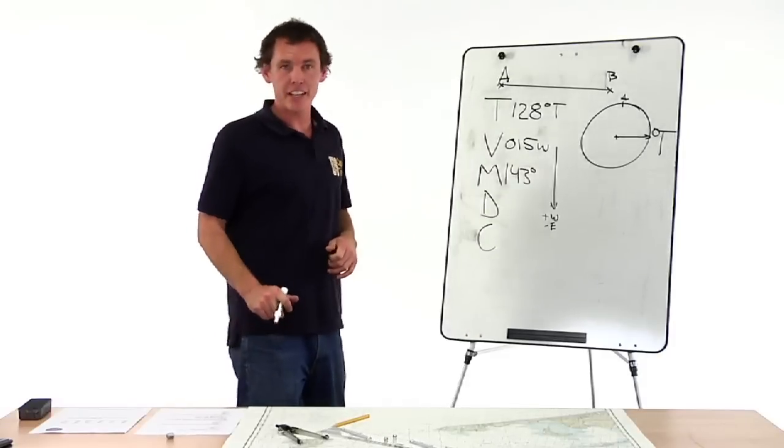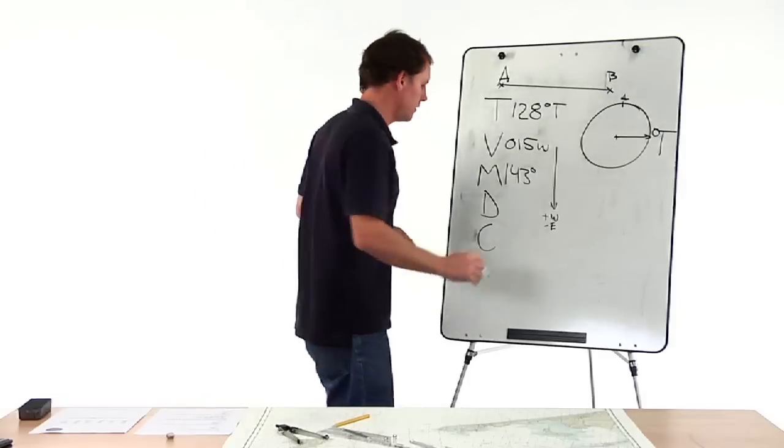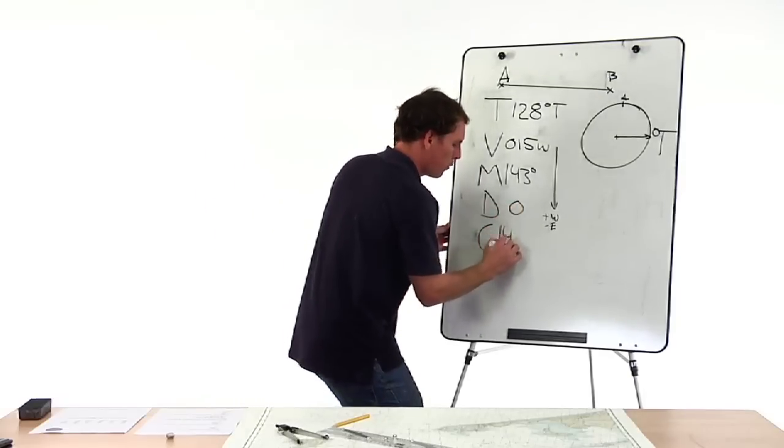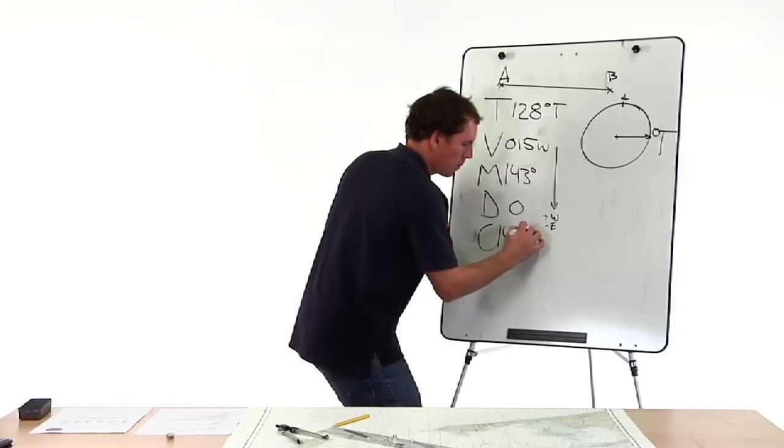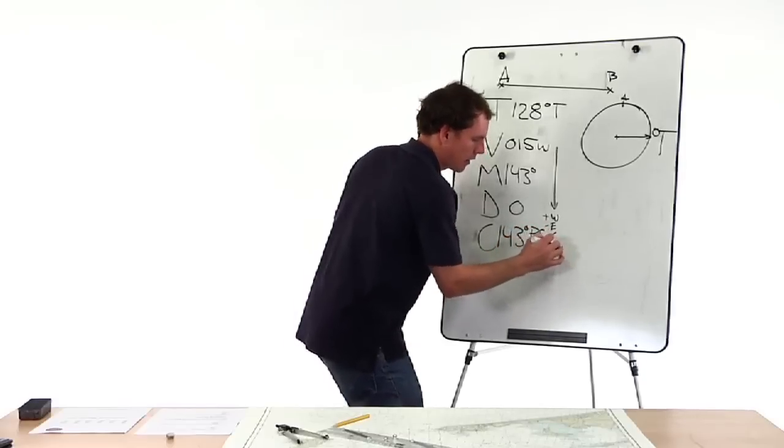We check our deviation table. We get a deviation of zero degrees, which brings us to 143 degrees per standard magnetic compass.